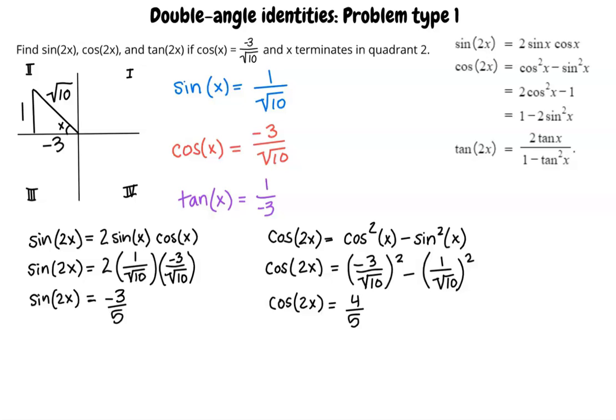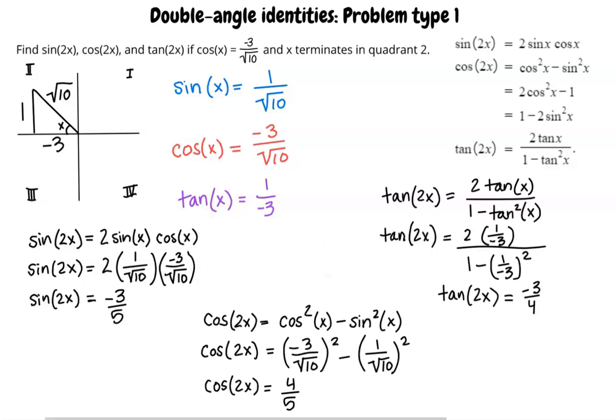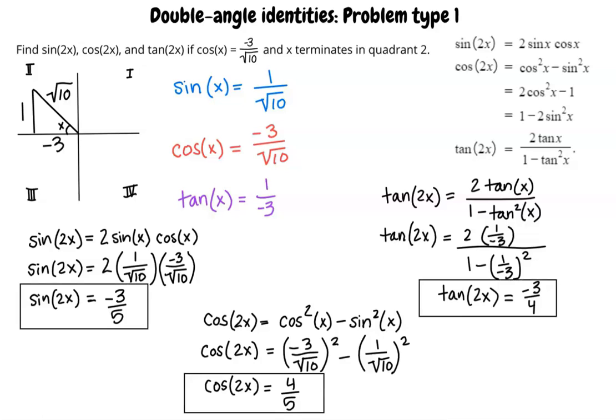Last, we will solve for tangent of 2x. Here are the steps for tangent. The final answers are sine of 2x equals negative 3 over 5, cosine of 2x equals 4 over 5, and tangent of 2x equals negative 3 over 4.